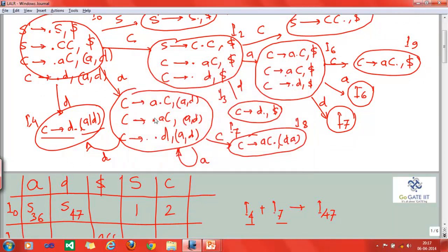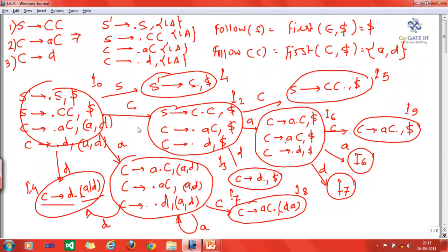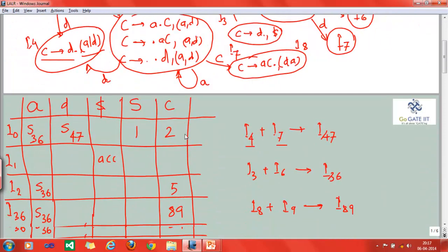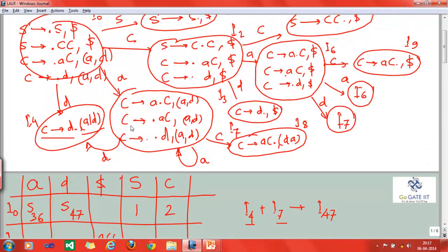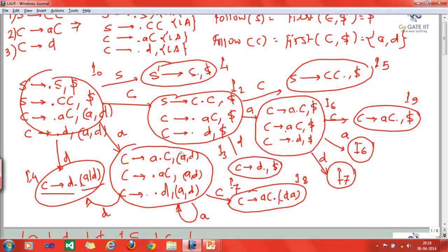To make it short, I have already written this. We have I3 and I6 also. You can see where we have I3 here, and this is I6. You can see that the left-hand side, or the productions which are in consideration, are same in both states but with different look-ahead symbols. So again, we can combine I3 and I6, which will generate I36.